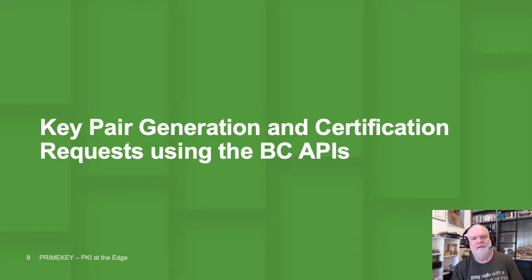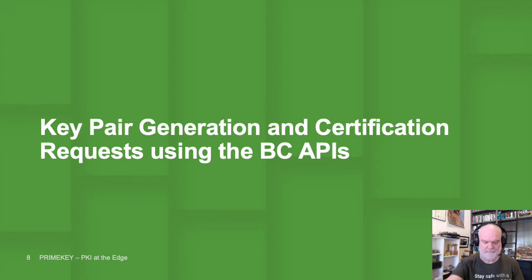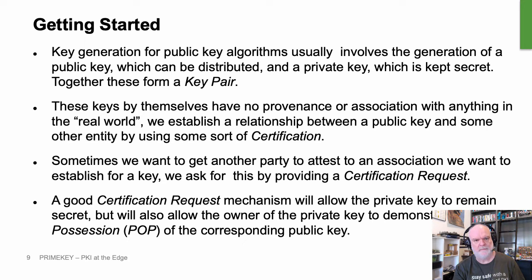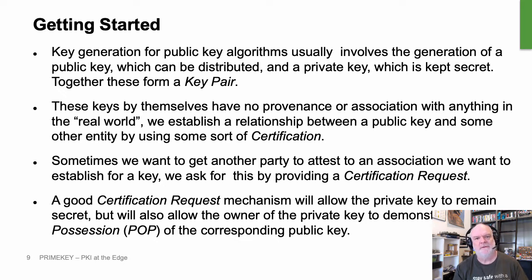So let's begin session one: key pair generation and certification requests using the Bouncy Castle APIs. Key generation for public key algorithms usually involves generation of a public key, which can be distributed, and a private key. This isn't actually always true with post-quantum algorithms, but that's outside of what we're talking about now. Together these things are referred to as a key pair.